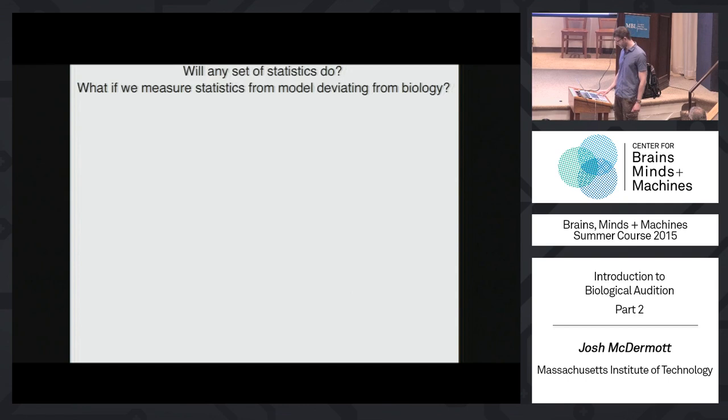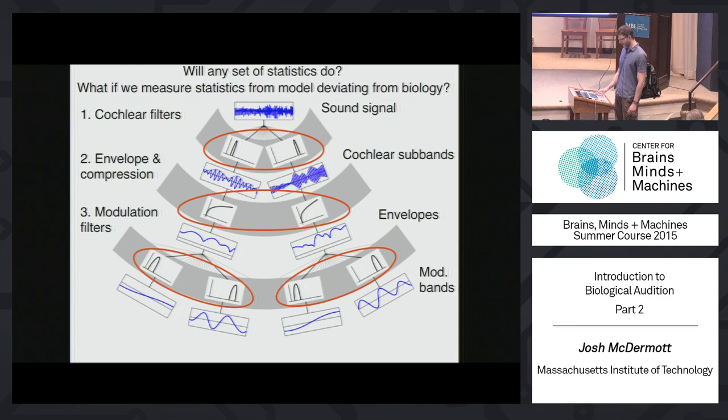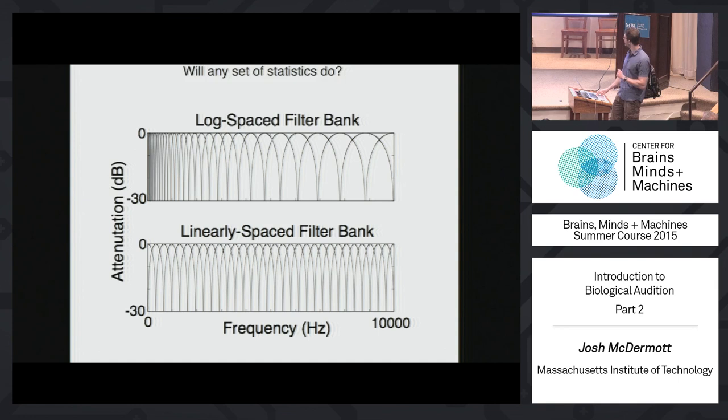We wonder what would happen if we measured statistics from a model that deviates from what we know about the biology of the ear. In the model we set out, there were a bunch of different stages: an initial stage of bandpass filtering, the process of extracting the envelope and applying amplitude compression, and modulation filtering. In each of these cases, there are particular characteristics of the signal processing that are explicitly intended to mimic what we see in biology.